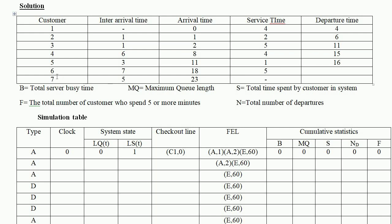Customer 5 departs at 15 plus 1 equals 16. Customer 6 arrives at minute 18 — since the server is free, starts immediately and departs at 18 plus 5 equals 23. Customer 7 arrives at minute 23. However, only 6 service time values are given, so we stop the event trace before computing customer 7's departure.